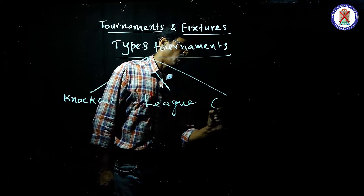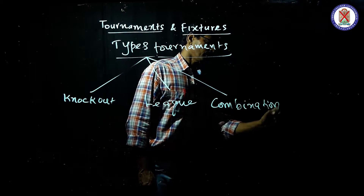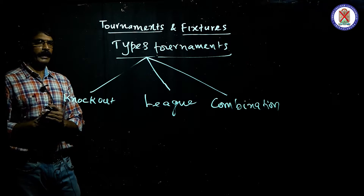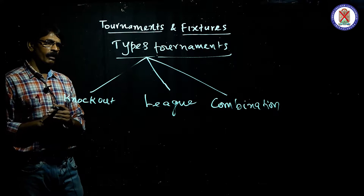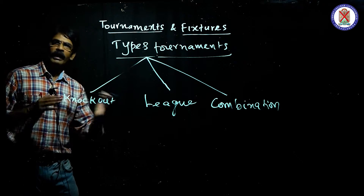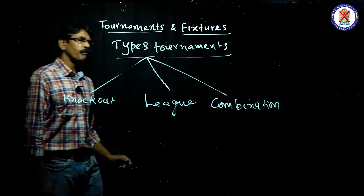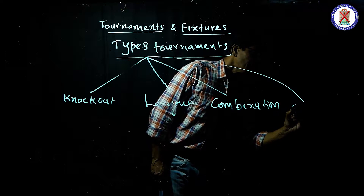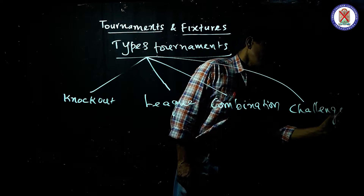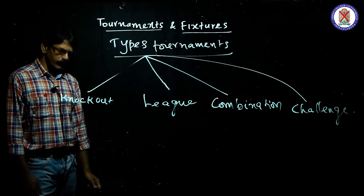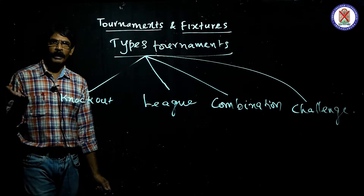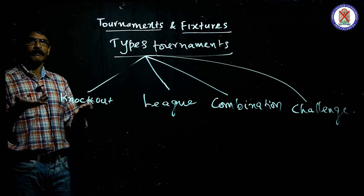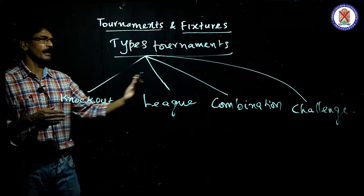The third type is the combination tournament, which is a combination of knockout and league. It may be knockout from knockout, knockout from league, or league from knockout — any type of combination. The fourth and last type is the challenge tournament, where each player challenges another player, they play between themselves to decide a winner, and accordingly improve their rankings.